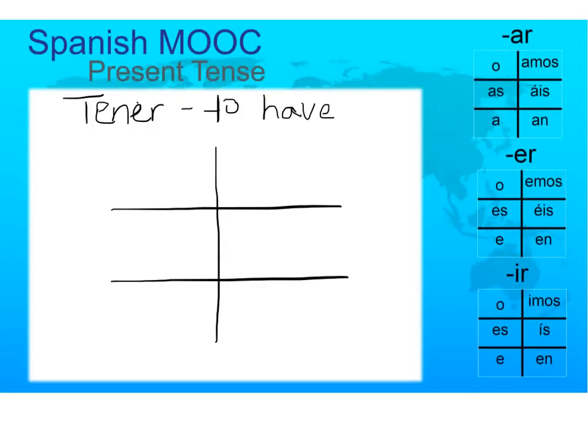We're going to learn about the conjugation of the verb tener, which means 'to have.' It's used to express possession and age and to say that you have physical attributes, like you have brown eyes or you have dark hair, what age you have, and things like that. And also to use in the phrase 'I have to' or 'you have to.'